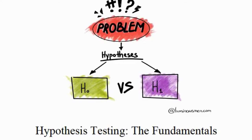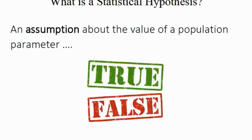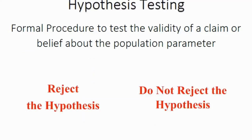Hey everybody, it's Professor Williams, and I want to talk a little bit about the fundamentals of hypothesis testing. So exactly what is a statistical hypothesis? It's simply an assumption about the value of a population parameter — the mean, the variance, the standard deviation, the population proportion. The key is that this assumption about the value can be true or it could be false.